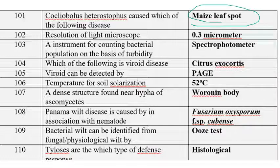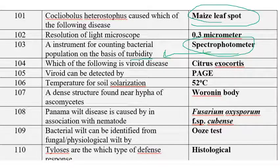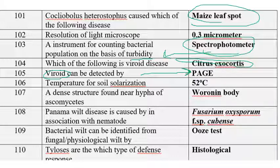Cochliobolus heterostrophus causes maize leaf spot. The resolution power of the microscope is 0.3 micrometer. An instrument used for counting bacterial population based on turbidity is the spectrophotometer. Each of the following is a viroid disease — citrus exocortis among the given options. For detection of viroids, special technique PAGE (polyacrylamide gel electrophoresis) is used.